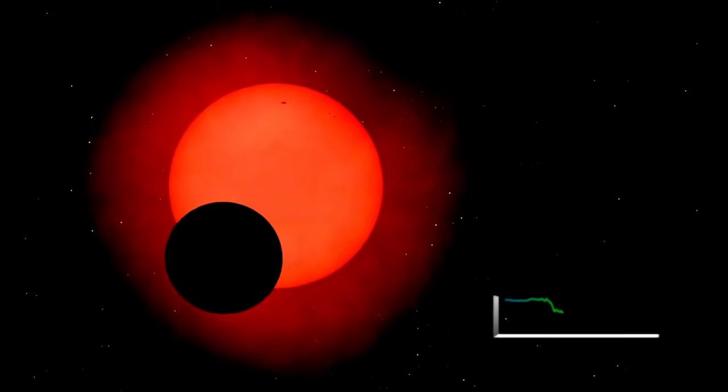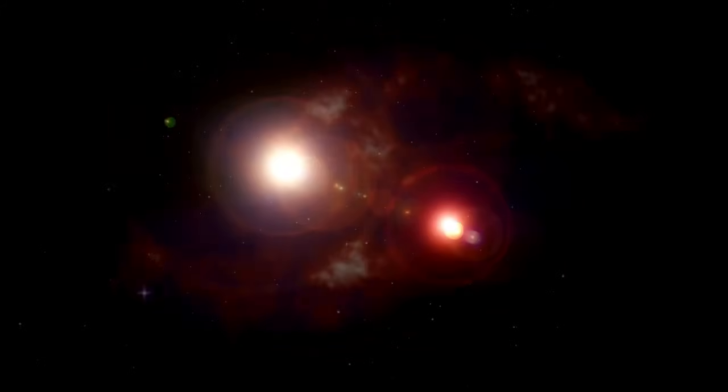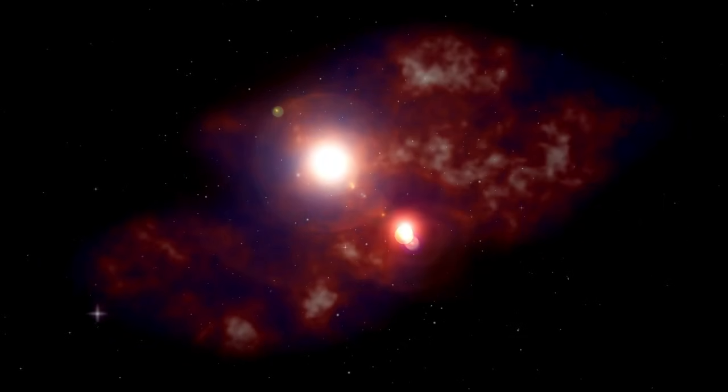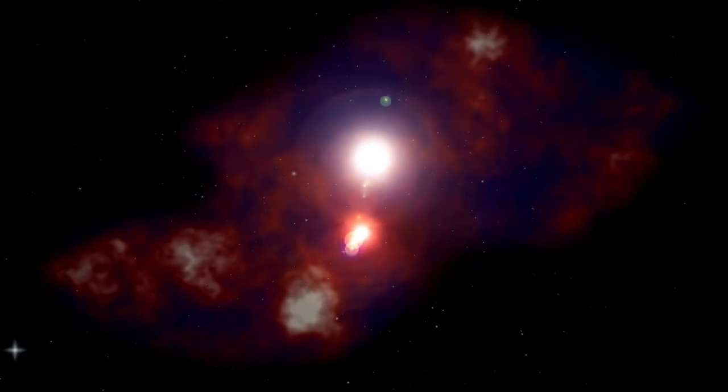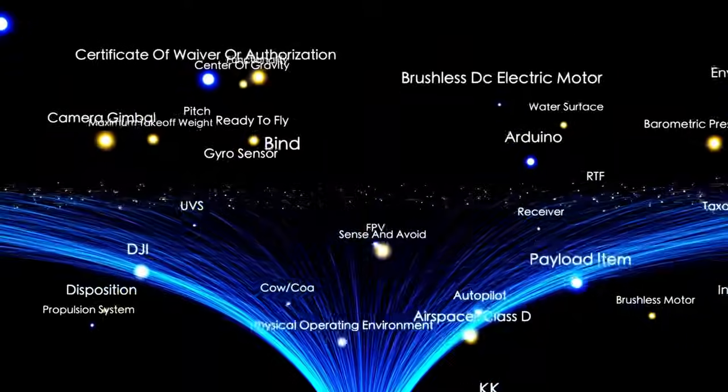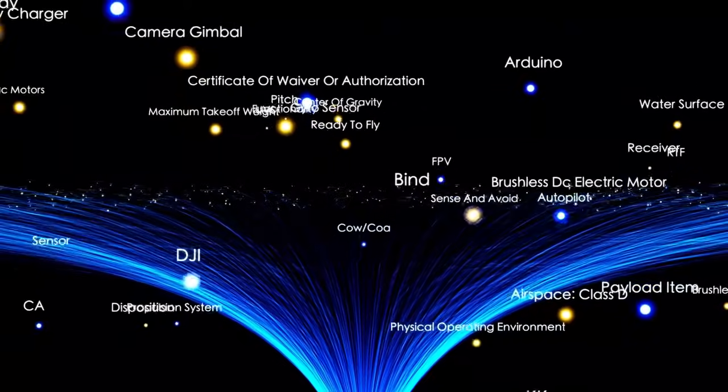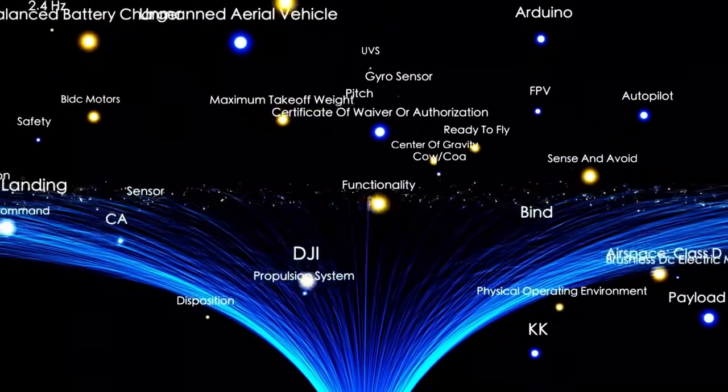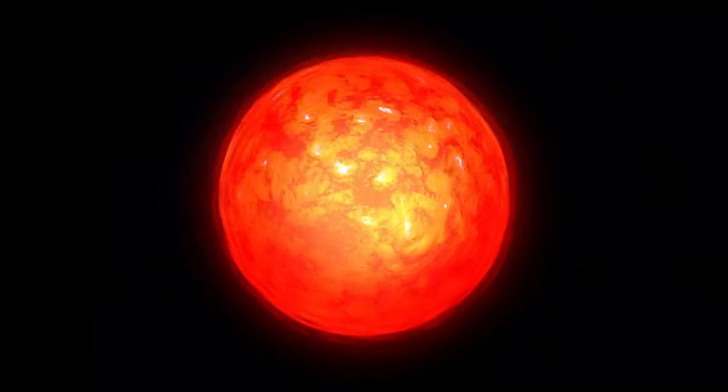It's estimated to be about 700 times the size of the Sun and over 10,000 times more luminous. Red supergiants like this are known for being unstable as they approach their final stages, with fluctuations in brightness being relatively common.